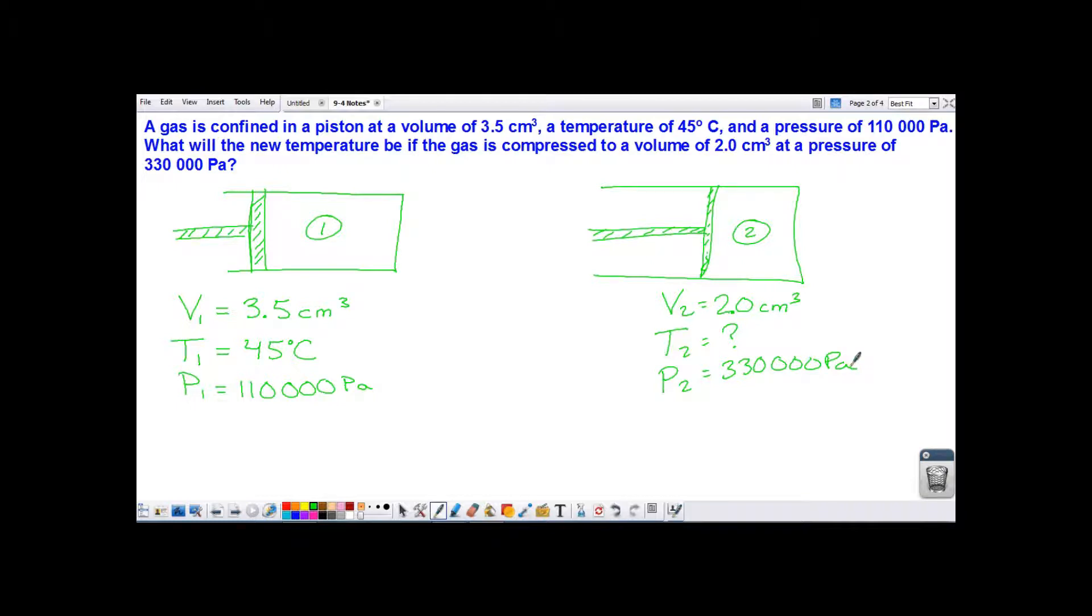Okay? So we're going to go ahead and use the ideal gas law. Now, when we solved our equation before, we solved the ideal gas law for Boltzmann's constant. And then we realized that if the number of molecules stays the same, if the number of molecules in situation 1 is the same as the number of molecules in situation 2, then we could simplify that equation even further.